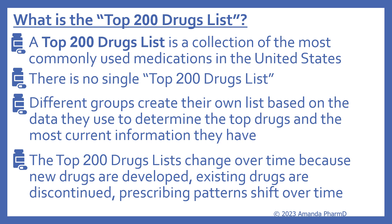So I'll first begin with what is the top 200 drugs list. A top 200 drugs list is a collection of the most commonly used medications in the United States, and there is actually no single top 200 drugs list. Different groups create their own lists based on the data they use to determine the top drugs and the most current information they have. The top 200 drugs lists change over time because new drugs are developed, existing drugs are discontinued, and prescribing patterns shift over time.